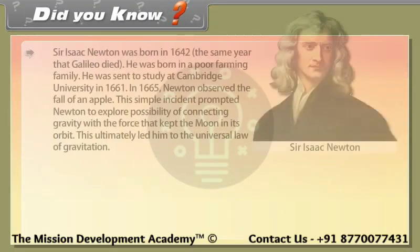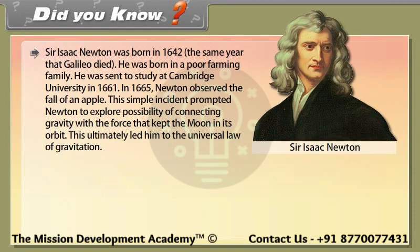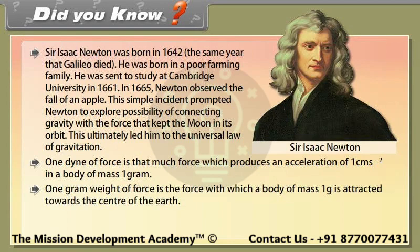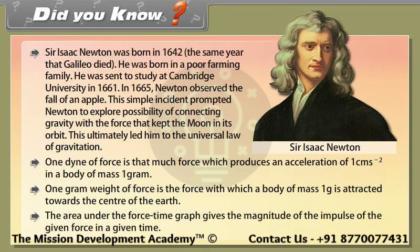Did you know: Sir Isaac Newton was born in 1642, the same year that Galileo died. He was born in a poor farming family and was sent to study at Cambridge University in 1661. In 1665, Newton observed the fall of an apple, which prompted him to explore the connection between gravity and the force keeping the moon in orbit, ultimately leading to the universal law of gravitation. One dyne of force produces an acceleration of 1 cm/s² in a body of mass 1 gram. The area under a force-time graph gives the magnitude of impulse.